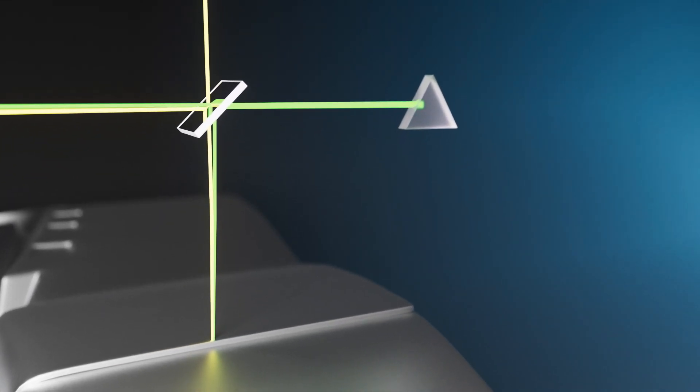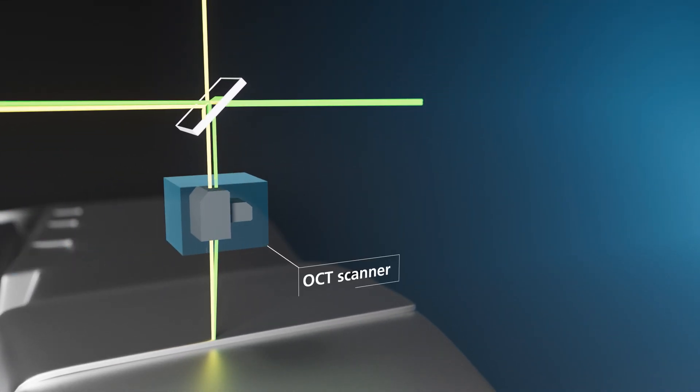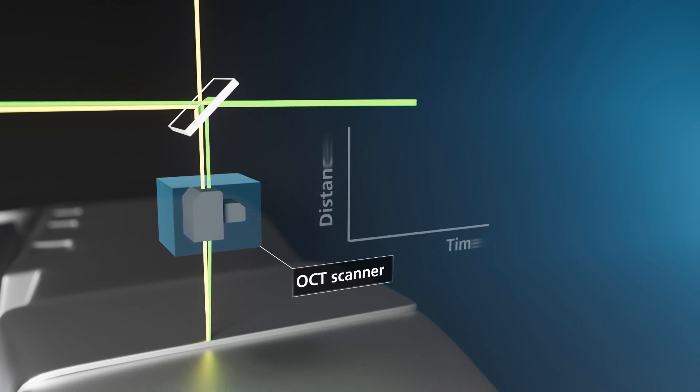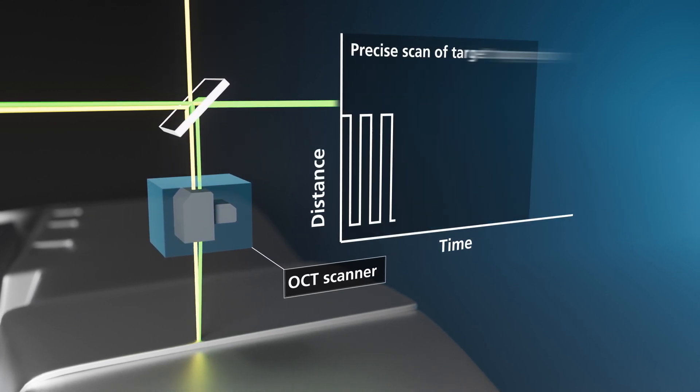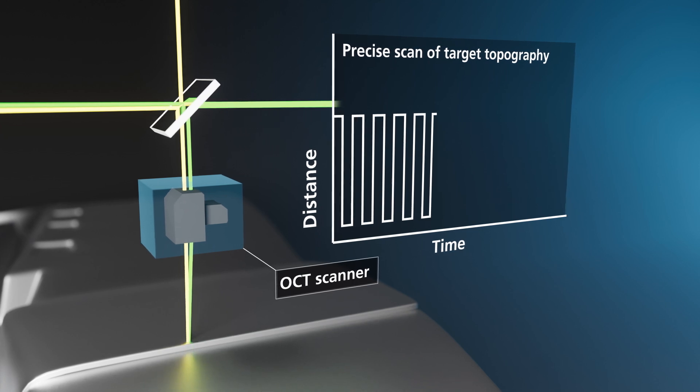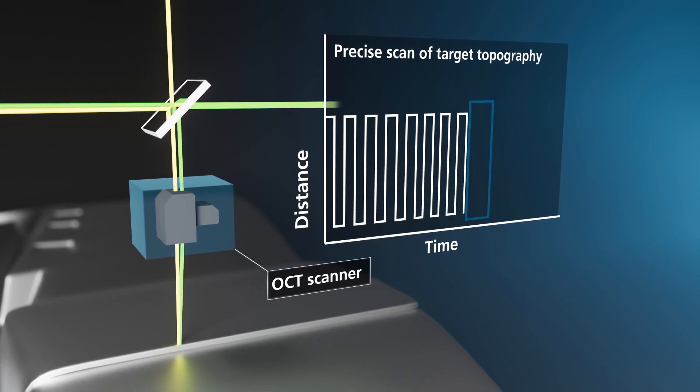The use of a 2D galvo scanner in the OCT measurement path makes it possible to deflect the beam to any position in the scan field, and as such it can be used to scan the surface of the part to be welded.